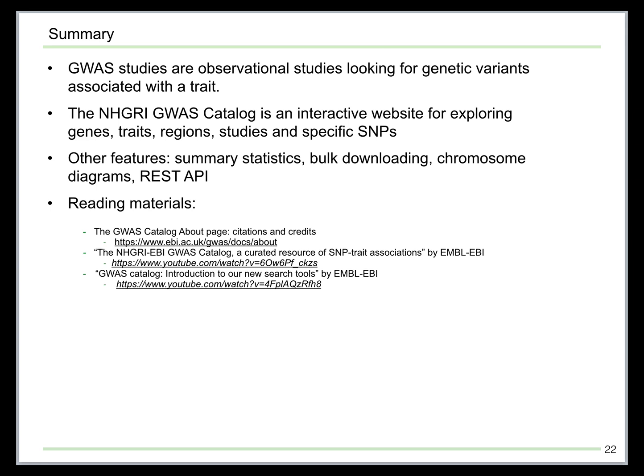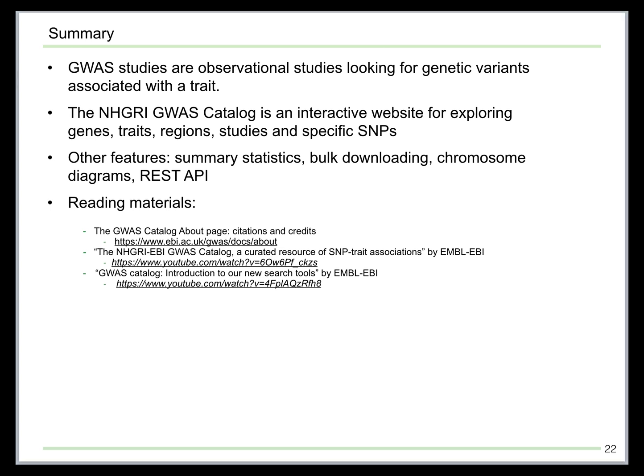To summarize, GWAS studies are observational studies looking for genetic variants associated with a trait. The NHGRI-EBI GWAS catalog is an interactive website for exploring genes, traits, regions, studies, and specific SNPs. Other useful features include summary statistics of all GWAS variants, bulk downloading of results, chromosome diagram view of all variants, and programmatic access via REST API. There are also additional reading materials including how to cite the GWAS catalog team, and two extra useful videos about the NHGRI-EBI GWAS catalog on YouTube. Hope you enjoy them. Thank you.